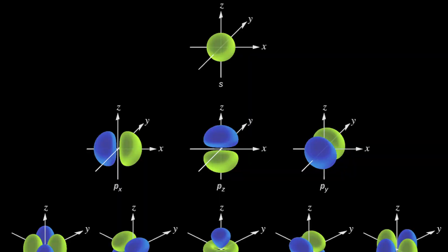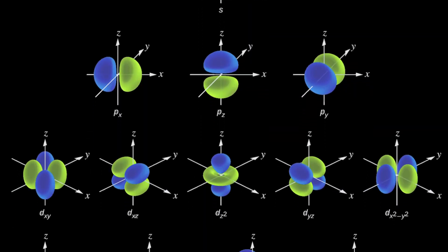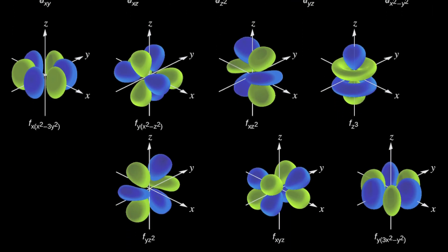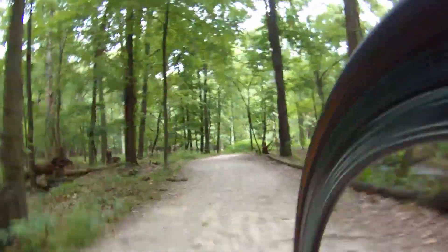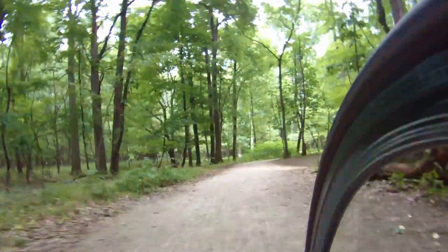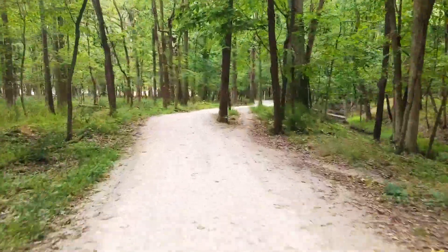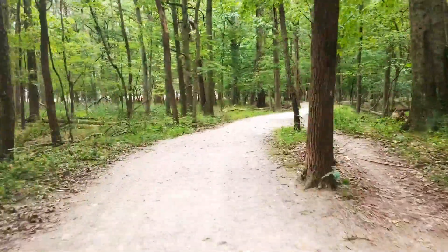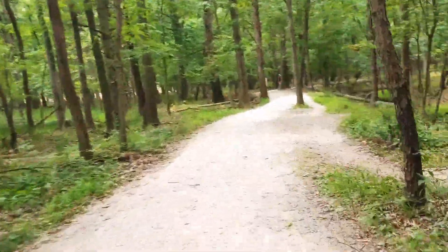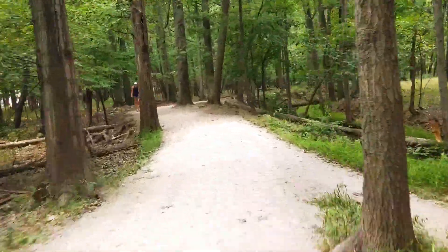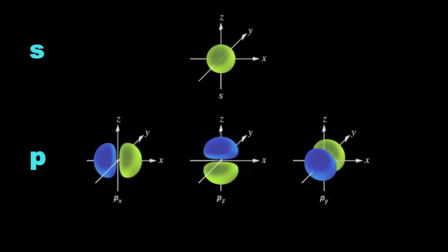These shapes are called atomic orbitals, and here are a few of them. An atomic orbital is a region of space with a high probability of having electrons in it. They come in different shapes and sizes, but our carbon atom only has S and P orbitals.